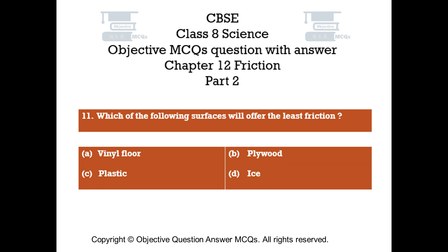Question number 11: Which of the following surfaces will offer the least friction? Option A: Vinyl floor. Option B: Plywood. Option C: Plastic. Option D: Ice.